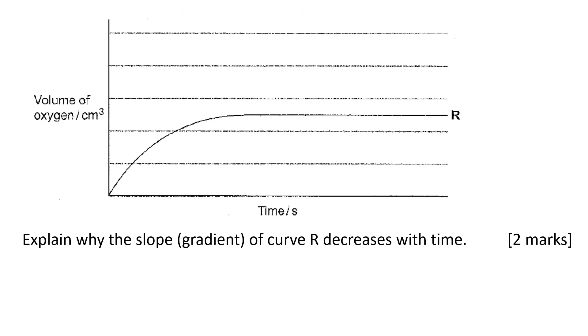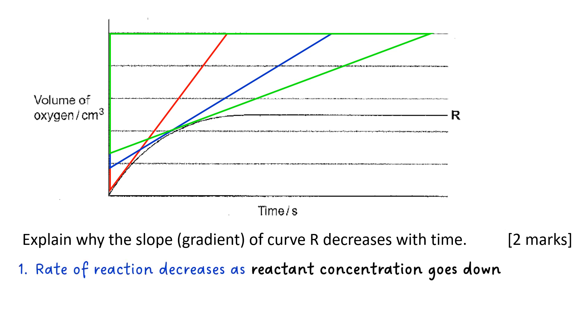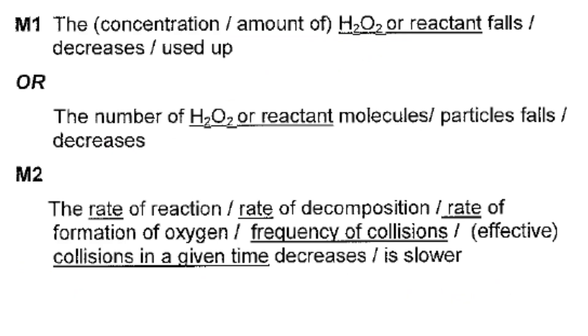This part asks you to explain why the slope or gradient of curve R decreases with time. Let's have a look at that using tangents. That would be the tangent at the beginning, the middle, and towards the end of the experiment. Clearly, you can see that the gradient of the tangent gets shallower and shallower. The reactant concentration is going down, which leads to less frequent collisions occurring between reactant particles. This is what they're looking for in the mark scheme.